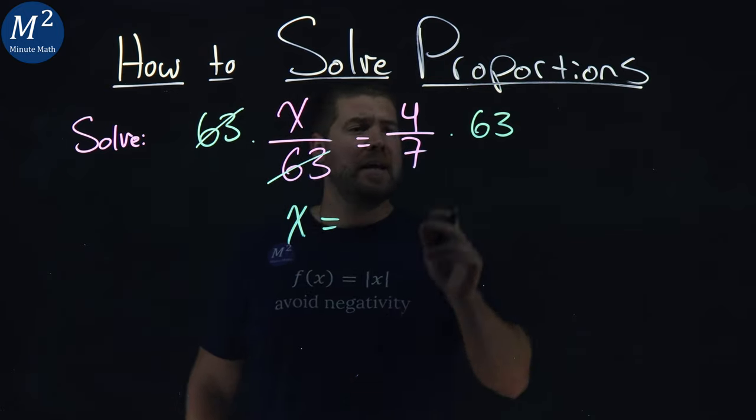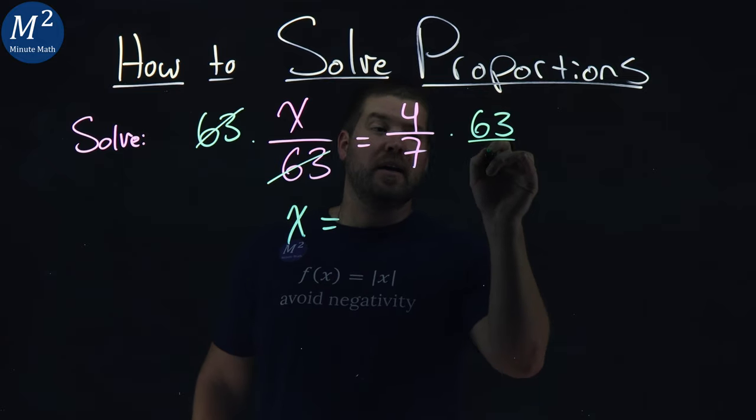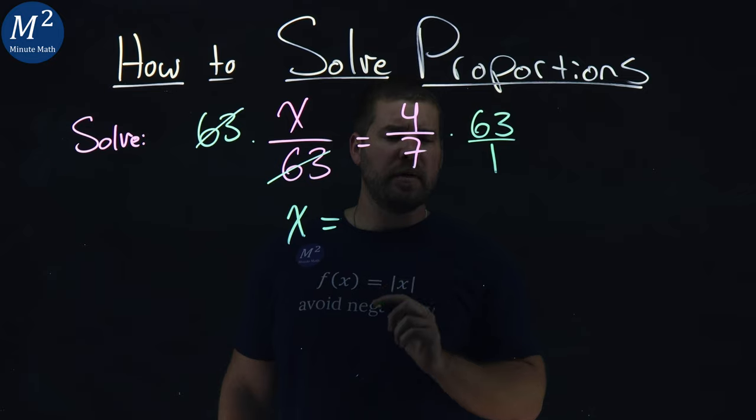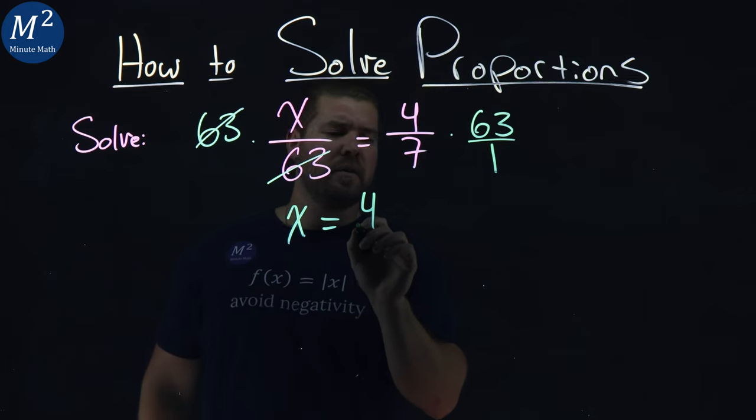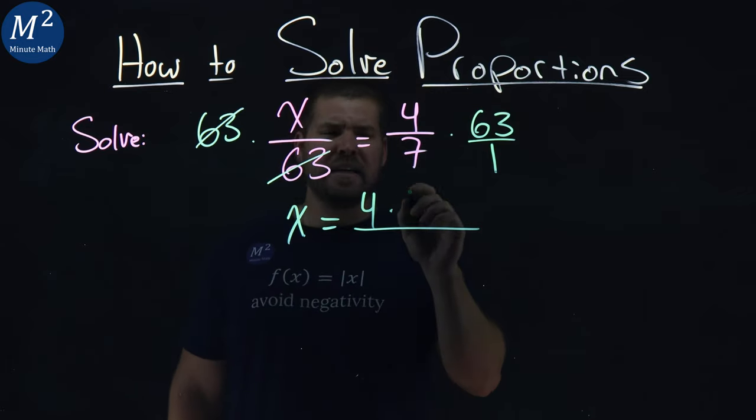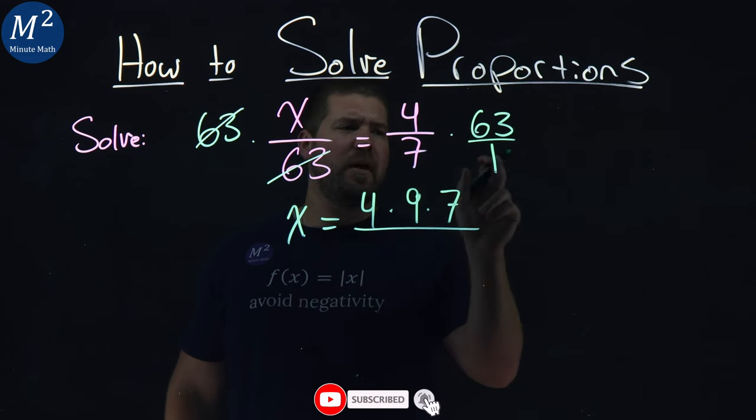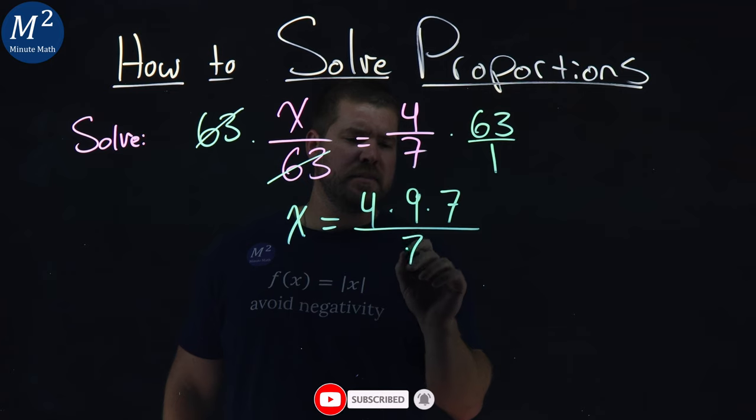Now, the right-hand side, remember, this is 63 over, like, a 1. We want to multiply across the numerator and across the denominator. We have 4 across the numerator times, and 63 is a 9 times a 7, if we break that up. Divided by the denominator, 7 and 1, which is a 7.